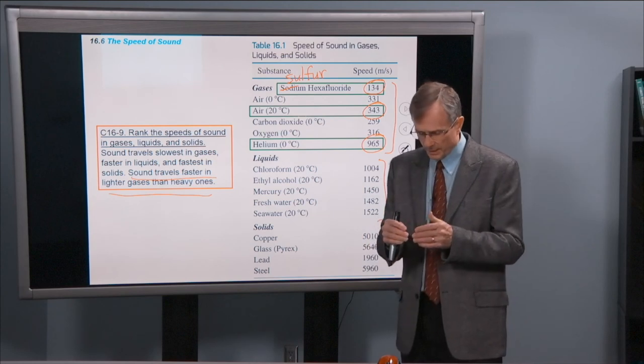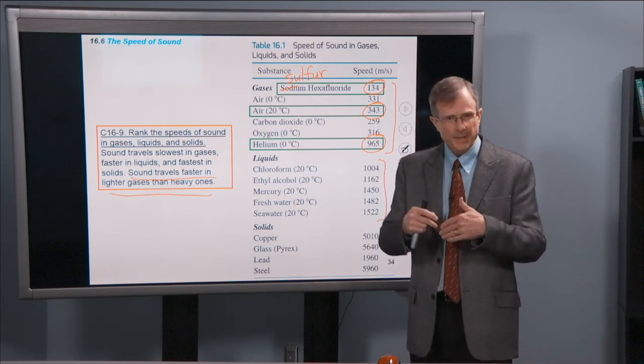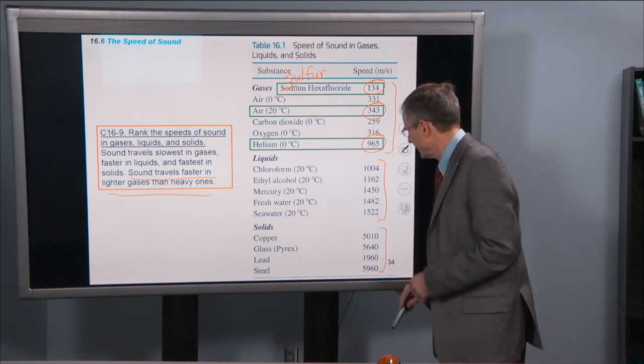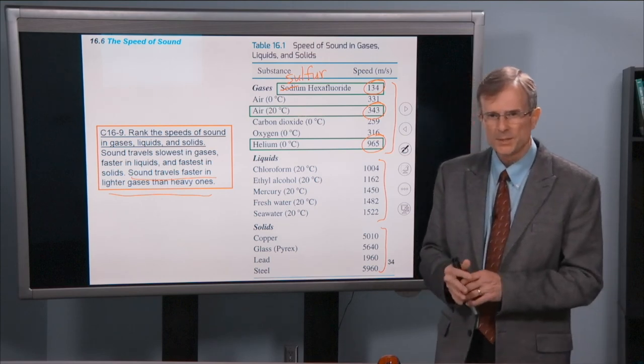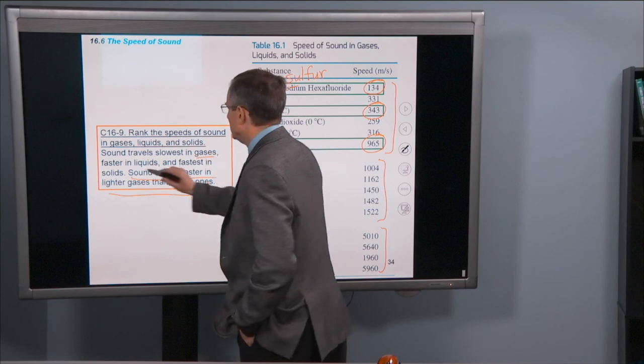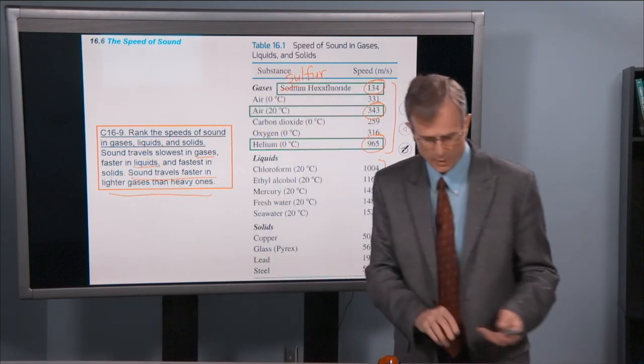Generally, a liquid, since the molecules are closer together, they communicate quicker, and that causes the sound to propagate faster. Solids even faster, as the molecules vibrate against each other. So sounds travel slowest in gases, faster in liquids, and then fastest in solids. That's the way that works.